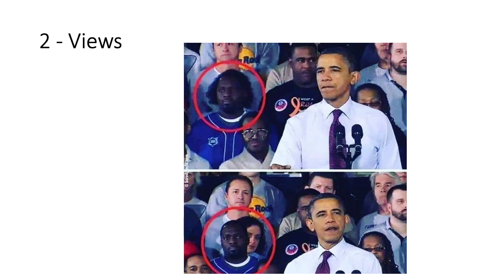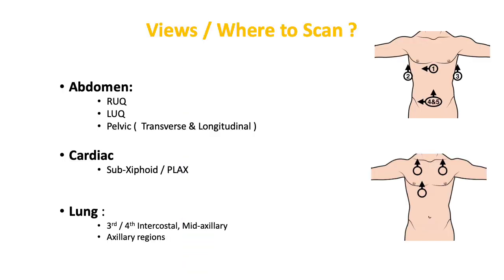The areas we need to scan during an EFAST scan include: the hepatorenal space or Morrison's pouch, the splenorenal space, the subxiphoid view, the pelvic view around the bladder, and because this is an Extended FAST scan, we also scan the lungs in the third or fourth intercostal space on both the right and left sides.